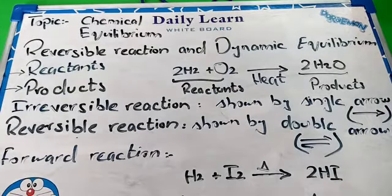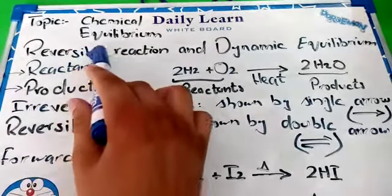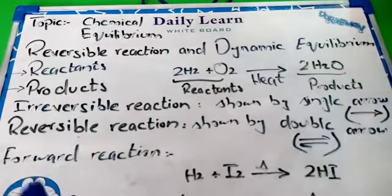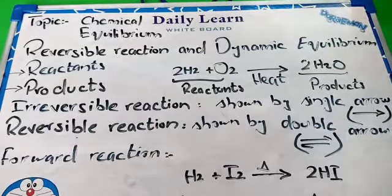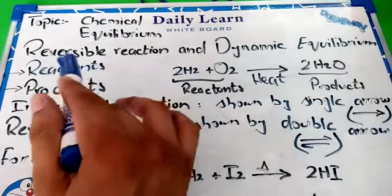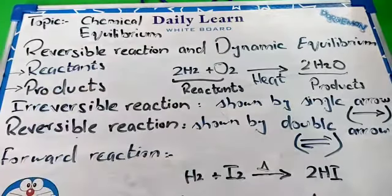Chapter number one, students. We will study reversible reaction and dynamic equilibrium. First, we will talk about reactants. What are the reactants, students? Like this: